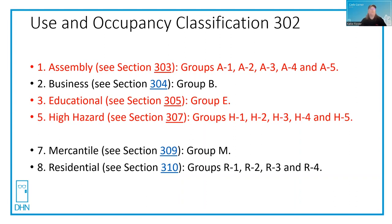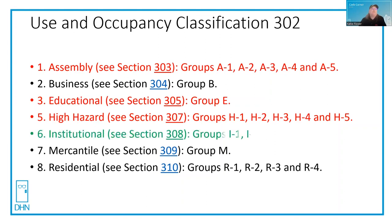So the code would then make things like exit devices required on these types of occupancies, where you don't see them on others.